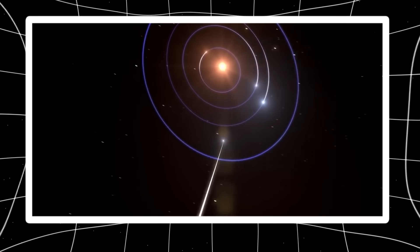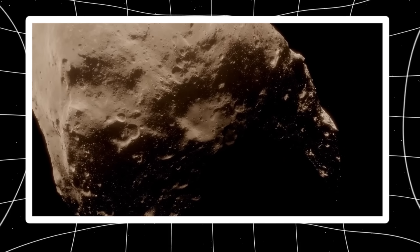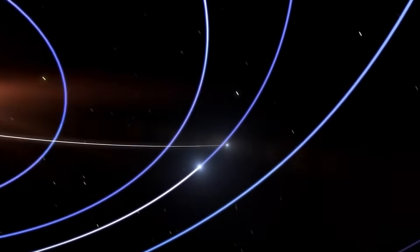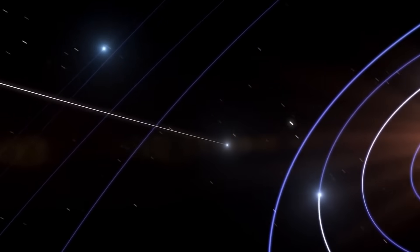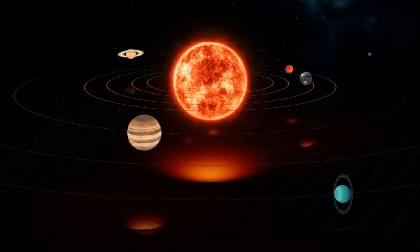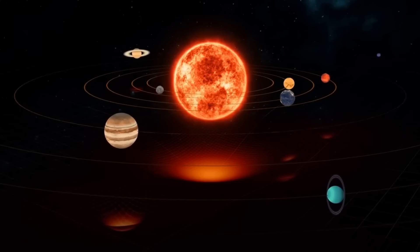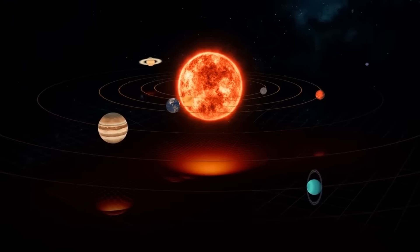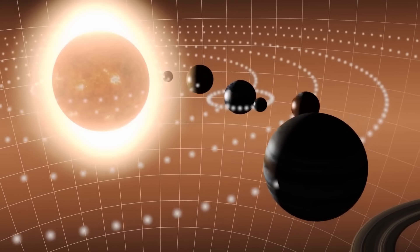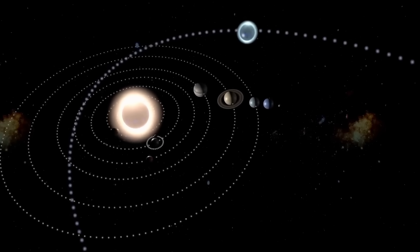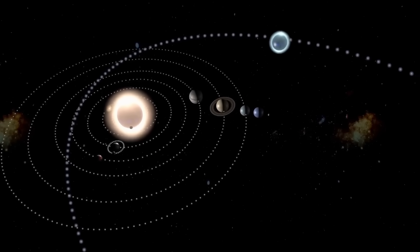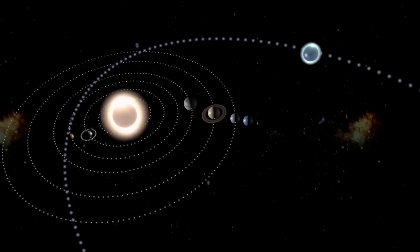But now, against all laws of physics as we know them, it has returned on a path that defies every gravitational model. And what's even more disturbing? The instruments tracking its return have confirmed that it's not alone. Dozens of similar objects have emerged alongside it, forming a constellation of anomalies. They don't drift like rocks. They hover, oscillate, adjust. And most chilling of all, they do so in perfect coordination.